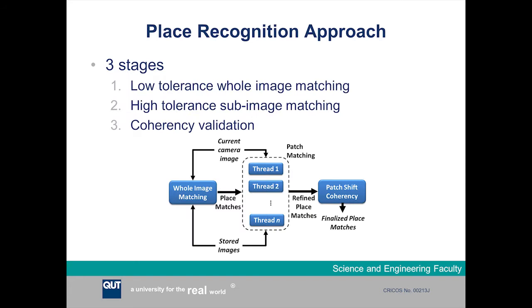We transform this concept of variable selectivity and variable tolerance into a place recognition system which has three stages. The first stage is whole image matching, the second stage is high-tolerance sub-image matching, and the third stage is a coherency validation step.